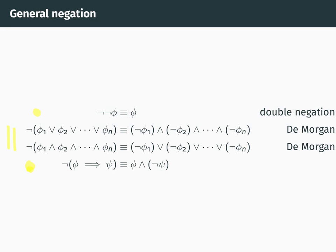So the first one of these says that if you negate phi1 or phi2 or phi3 up to phiN, then that's logically equivalent to the negation of phi1 and the negation of phi2 and so on up to the negation of phiN. And secondly, if you look at not phi1 and phi2 and phi3 up to phiN, then that's logically equivalent to not phi1 or not phi2 or not phi3 up to not phiN.